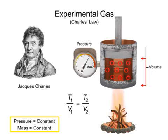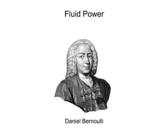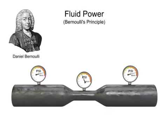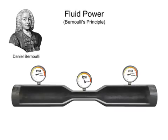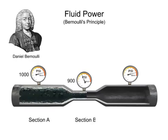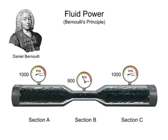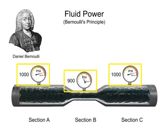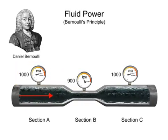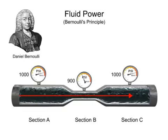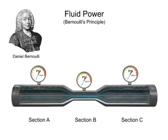In the mid-1700s, Daniel Bernoulli discovered another very powerful rule in the field of fluid mechanics, known as Bernoulli's Principle. This rule is related to the theory of conservation of energy, which states that energy can neither be created nor destroyed. In this fluid system, pressure is potential energy and fluid flow is kinetic energy. Bernoulli's Principle states that an increase in the speed of an incompressible fluid occurs simultaneously with a decrease in pressure.